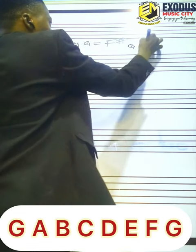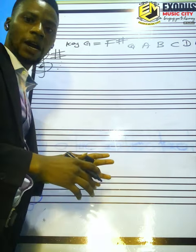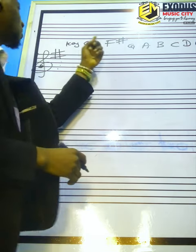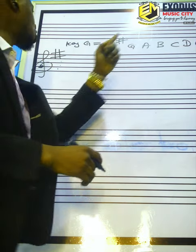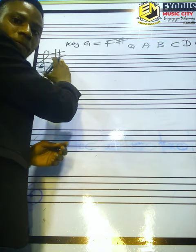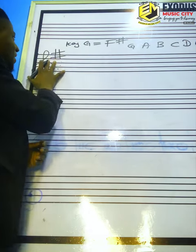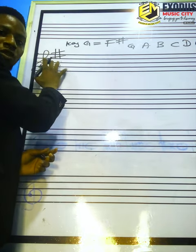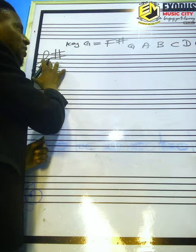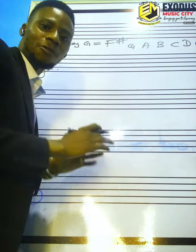So the scale of G is G, A, B, C, D, E, F, and G. On the scale of G, F is sharp — so we've indicated the key signature. That is the construction of scale with key signature: the key signature has been placed, then after its placement, the arrangement of the notes in alphabetical order.